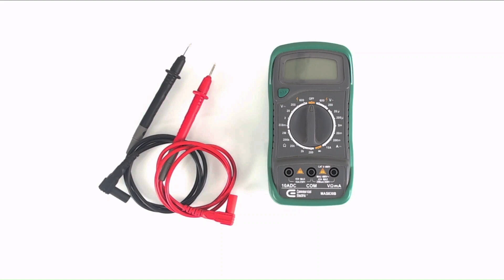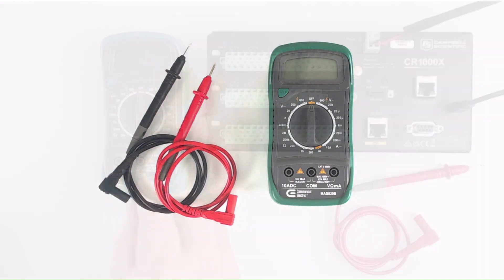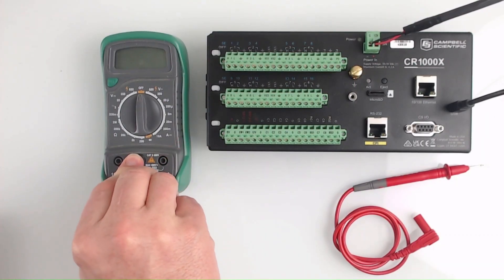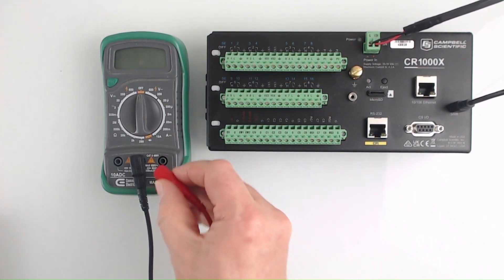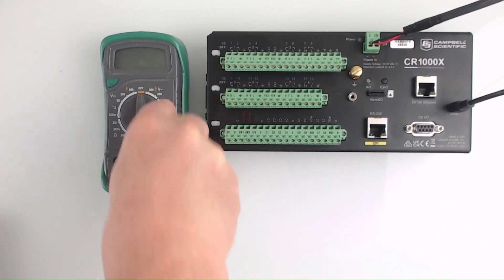To prepare for continuity measurements, push the connector for the black probe into the socket labeled COM and the connector for the red probe into the socket labeled V omega. This is the same configuration we used to measure DC voltage earlier.